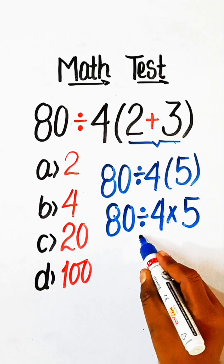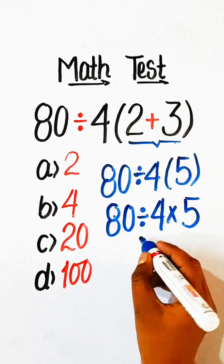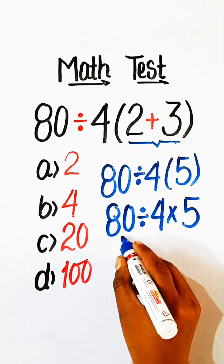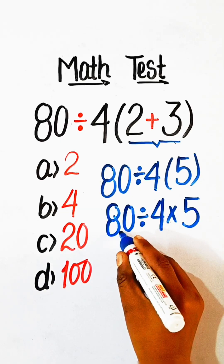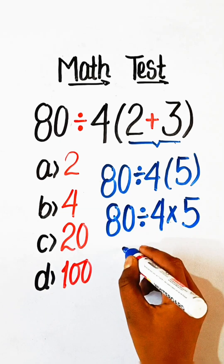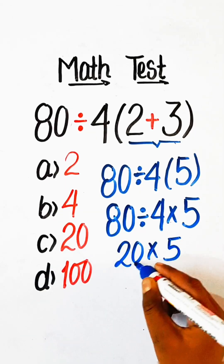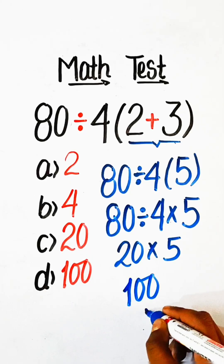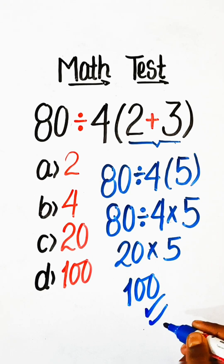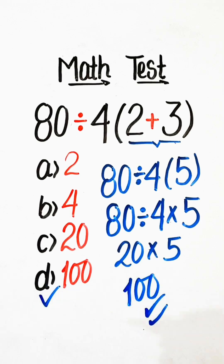We have division and multiplication, so we will do the operation from left to right. 80 divided by 4 is 20, multiply by 5 gives us 100. So Option D, 100, will be our correct answer.